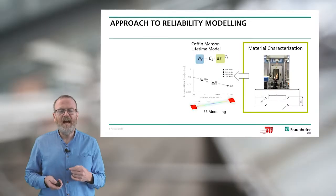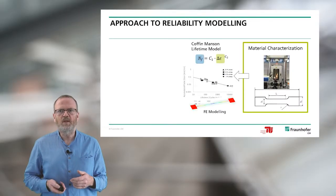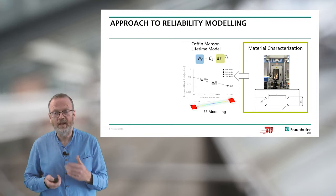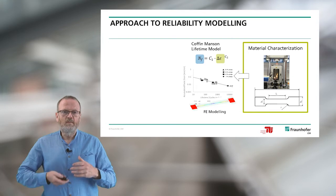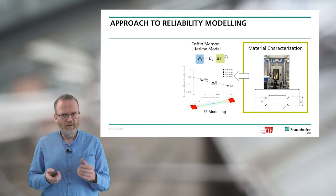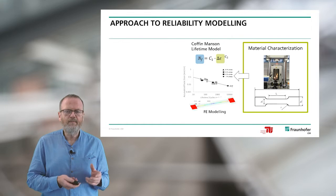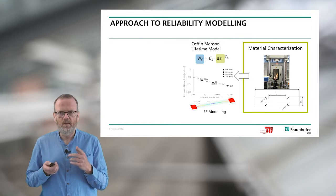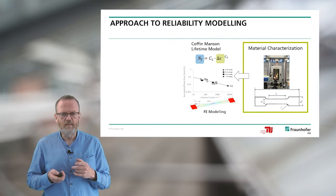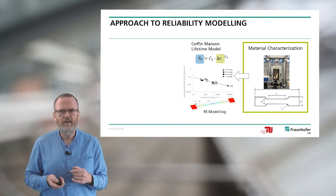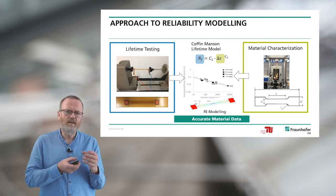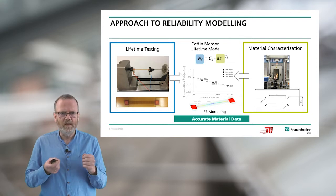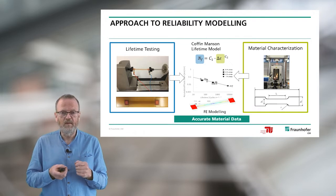We also need accurate materials data that we determine using experimental methods. For determination of accurate materials data, the first step is to characterize the material properties. For this first step, we use the pure polymer system — polyurethane — and the second part is the copper line, using the dog bone sample geometry. The second part combines polyurethane and copper, which we use for lifetime cycling loading at different amplitudes and frequencies.